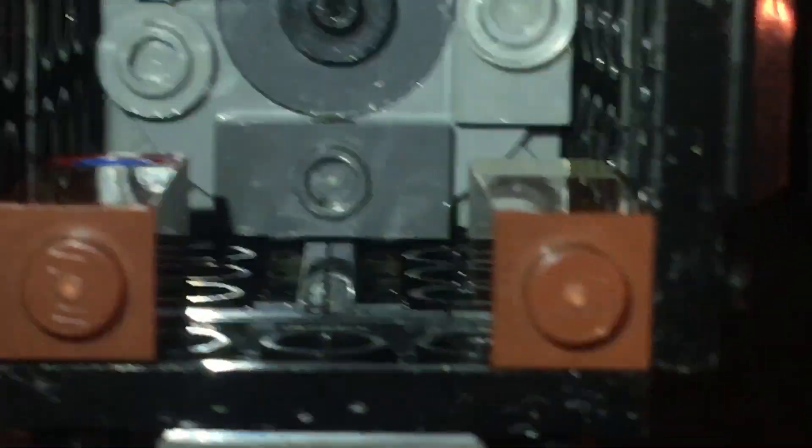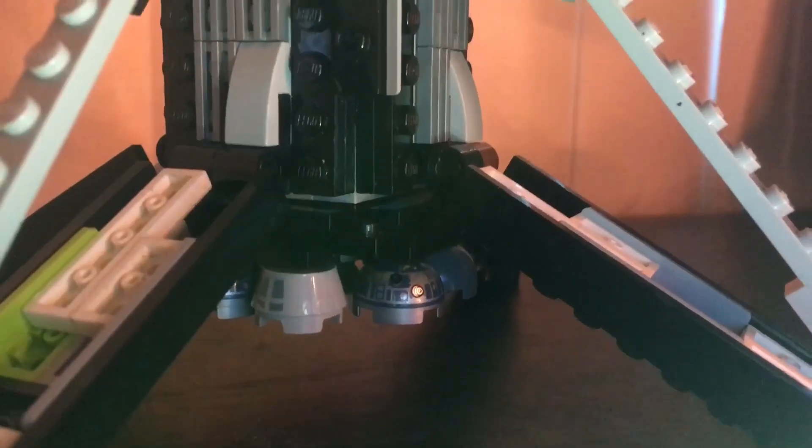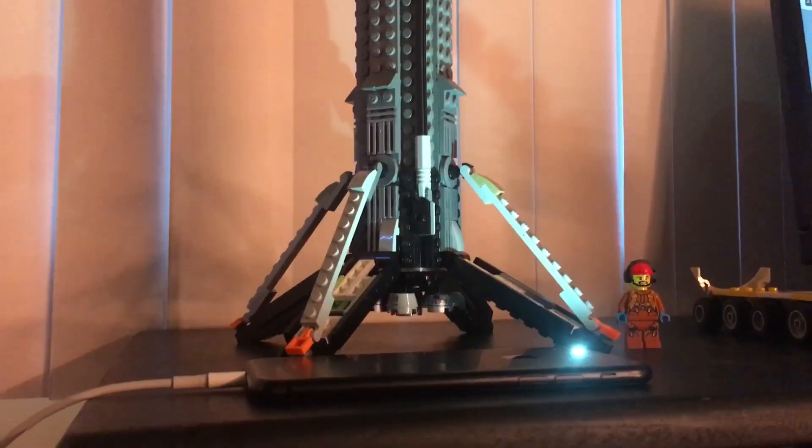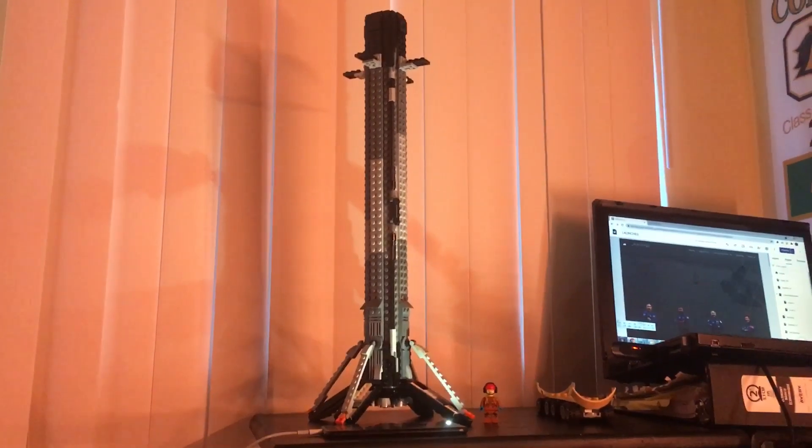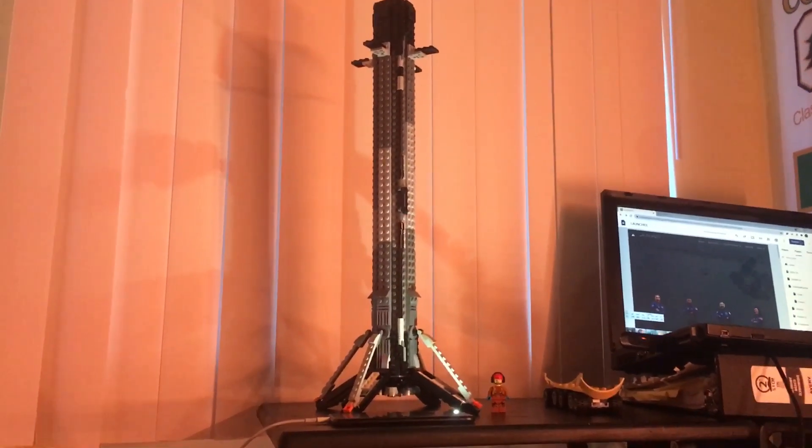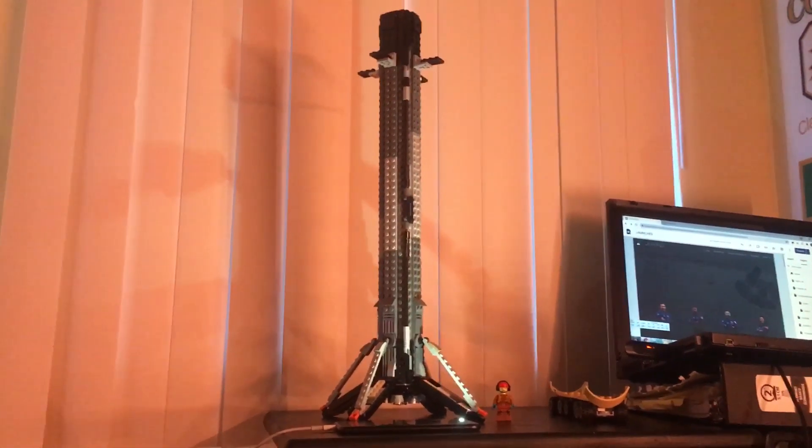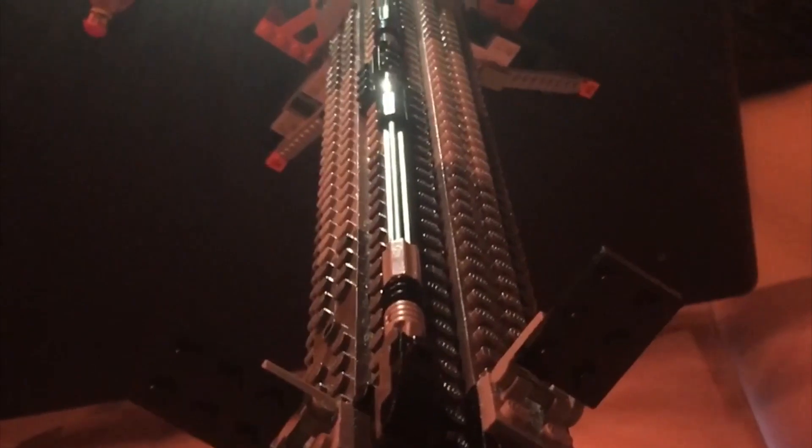So next we're going to take a look at what Falcon 9 looks like in its landed configuration. Here we can see Falcon 9 in its landed configuration. The four landing legs are deployed, and we have a minifigure off to the lower right for scale. Now coming up top, we have the four deployable grid fins, which you can see are deployed.